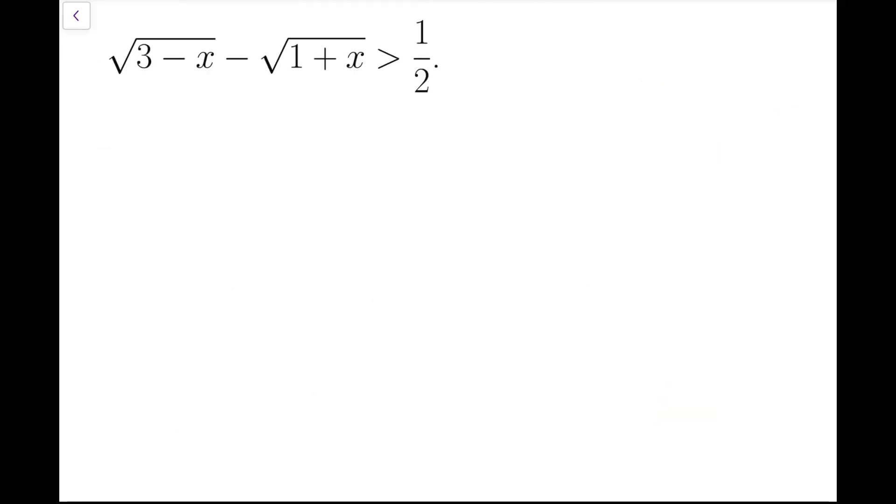This is a fairly straightforward inequality. All we have to do is to square both sides. So for the left hand side, we are going to have 3 minus x minus 2 times the square root of 3 minus x, multiplied by square root of 1 plus x, and this added by 1 plus x, and this will be greater than a quarter.